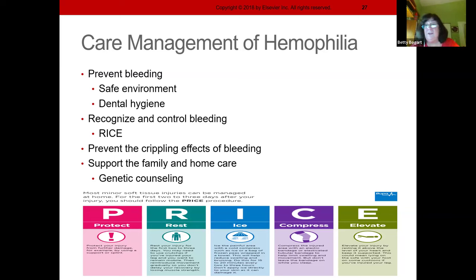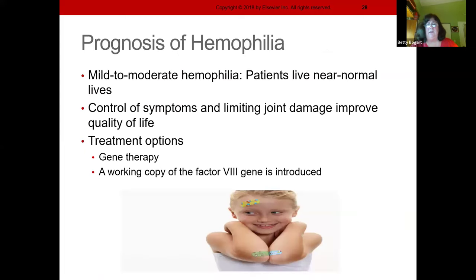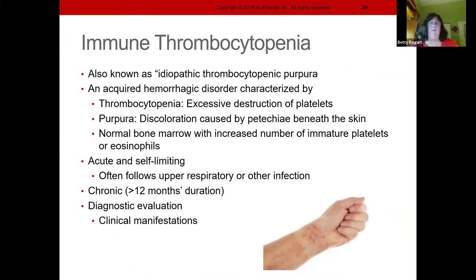With treatment, hemophilia patients can have a normal life — as long as joints haven't been damaged by repeated bleeding and they're not crippled or wheelchair-bound. Gene therapy is in development. ITP — idiopathic or immune thrombocytopenic purpura — is all about platelets. The P stands for platelets, and it involves decreased platelet counts.